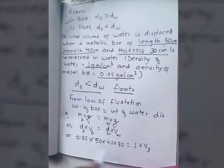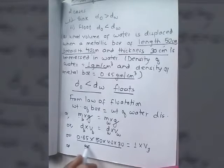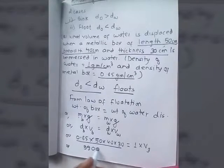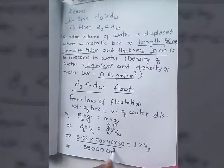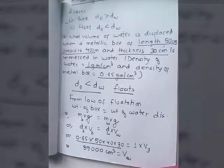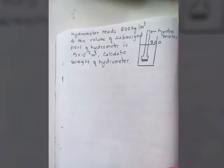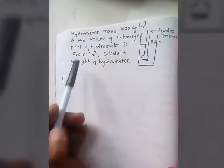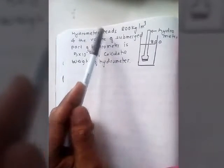Multiplying it all out, we get 39,000 cm³ as the volume of displaced water. That is the answer to this first problem.